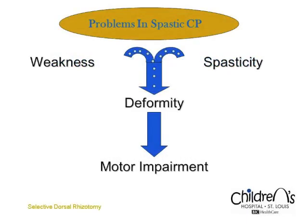In spastic cerebral palsy, there are three major problems: motor impairment, spasticity, and deformities of the lower extremities. Motor weakness is the essential part of cerebral palsy. Because of motor weakness, patients have difficulty sitting, standing, walking, and other activities.